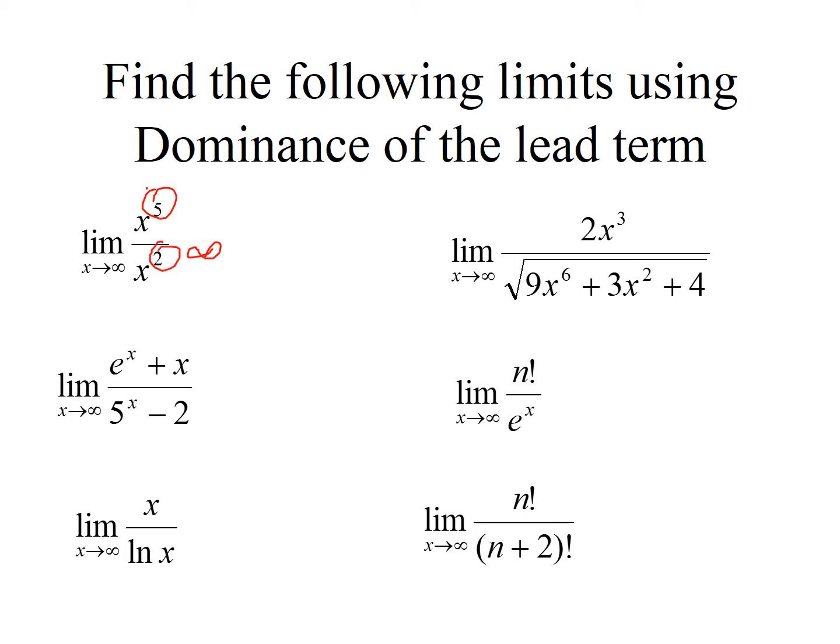If we look at this second part, it may be helpful to break this into two terms. So I can look at this as e to the x over 5 to the x minus 2 plus x over 5x minus 2. Now because 5 to the x grows faster than e to the x and the fastest growing is on the bottom, notice also as we go towards infinity, this becomes negligible. If I have a billion raised to the fifth power, I don't really care about this 2. So those become negligible as we go towards infinity.